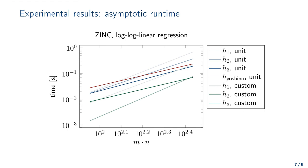This plot shows the runtime trend for the zinc data set in log-log space. Again, we see that the linear and quadratic bounds are faster for smaller trees, but have worse slopes, such that they become slower for larger trees. The slopes for the cubic bound and Yoshino's bound are about the same, but the cubic bound has a better constant factor, especially with custom costs.